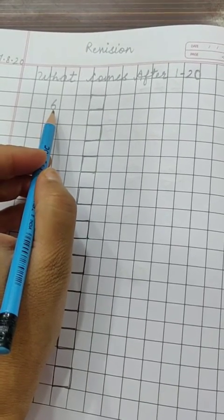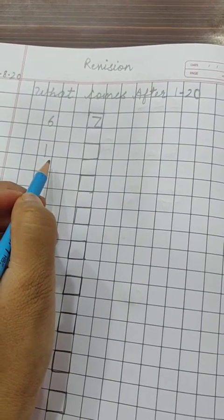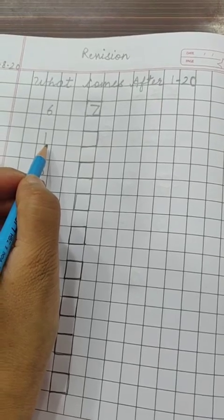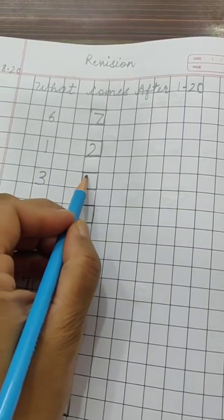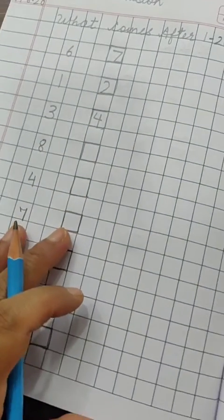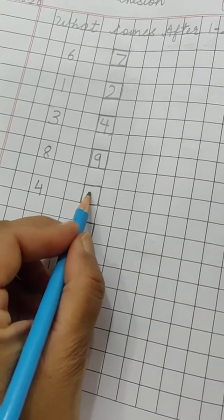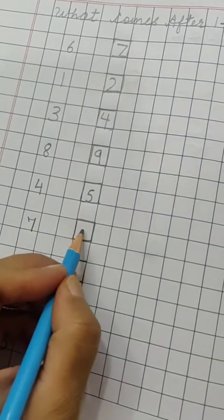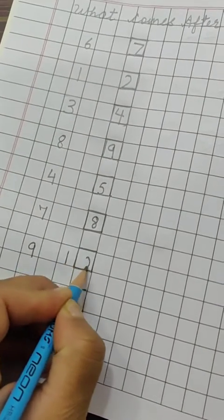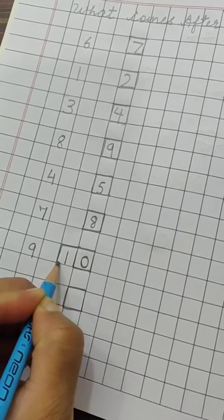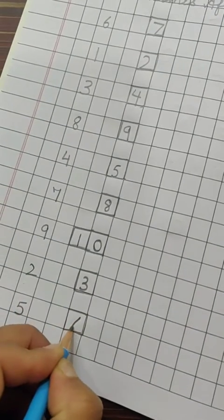You have 7. What will you write in the box? 1, 2, 3. What will you write in the box? 8, 9. 4, 5. 7, 8. 9, 10. 10, 11. 2, 3. 5, 6. Okay.